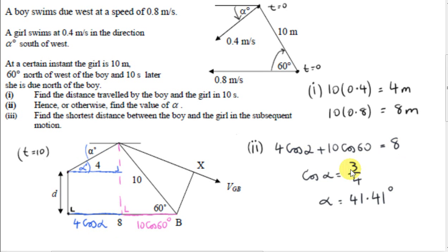Now, it's straightforward to solve this equation. There's only one unknown, cos alpha. Cos alpha works out to be 3 quarters. From that, we get alpha equals 41.41 degrees. So now we know the direction that the girl swims in. So her velocity is fully specified. We have her speed, 0.4, and now we have her direction.